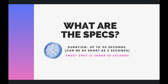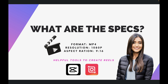It can be as short as three seconds, so between three and 90 seconds is the duration of the reel. If you're scheduling reels in advance, my recommendation — the sweet spot — is to keep those reels under 60 seconds. The format should be MP4, the resolution should be 1080p, and the aspect ratio should be 9 by 16.